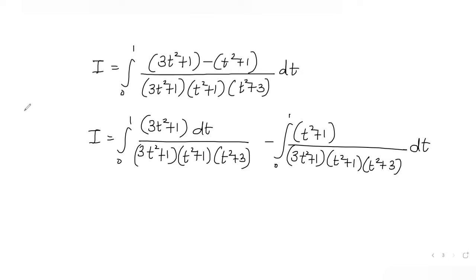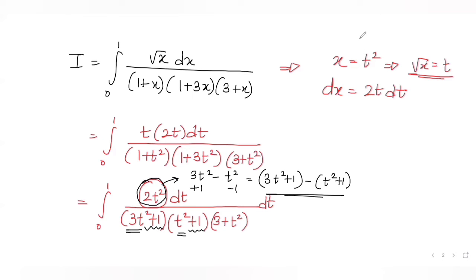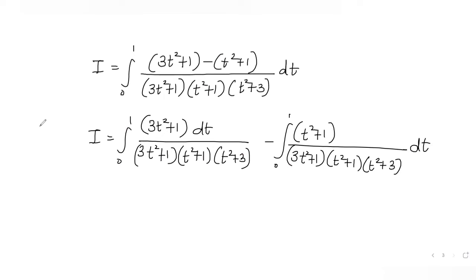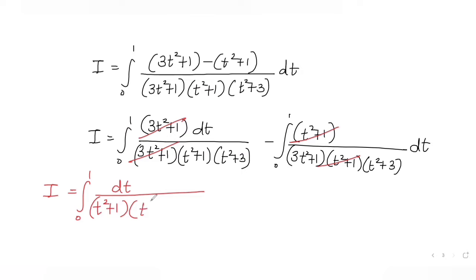Some of you may wonder why I didn't change the limits when using substitution. Since x = t², when x = 0, t = 0, and when x = 1, t = 1 — so the limits remain 0 to 1. After cancellation in the first split integral, (3t²+1) cancels, leaving ∫₀¹ dt / [(t²+1)(t²+3)].